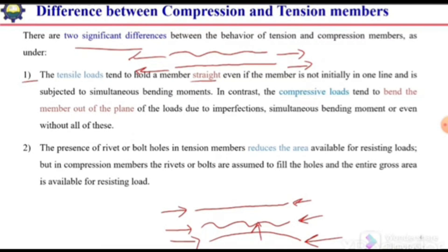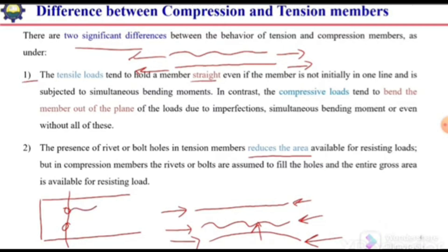That is the first difference between tension members and compression members. The second difference is the presence of rivet or bolt holes. In tension members, bolt holes reduce the area — when we find out the capacity of a tension member, we consider the net area at the connection, subtracting the area of the holes.